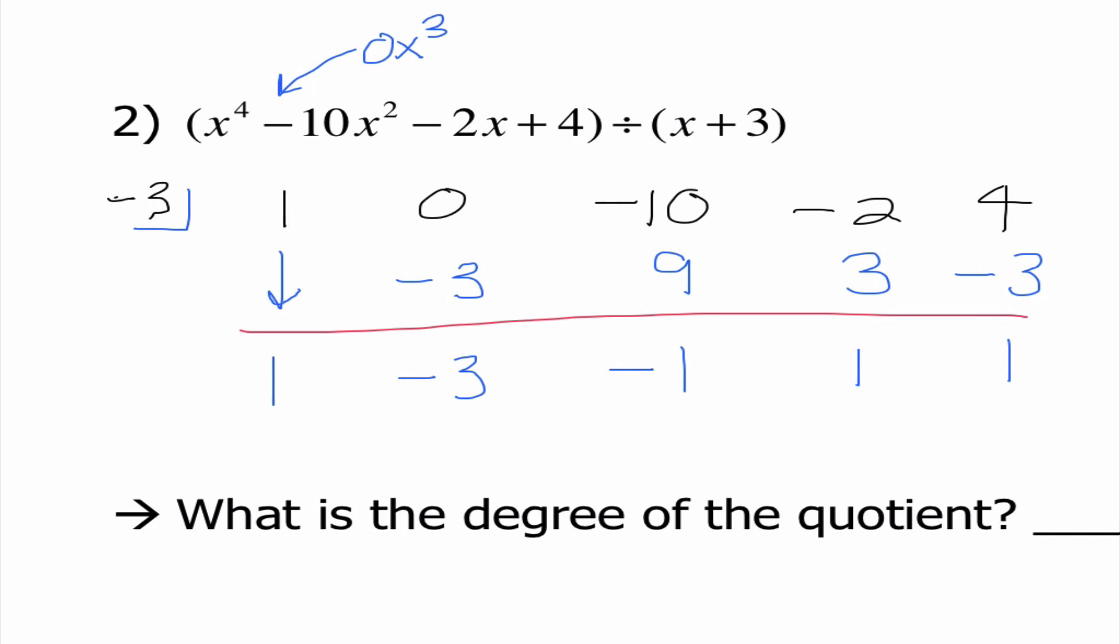So I know I need to rewrite this as an expression. And we always start one degree lower than my original polynomial. So I'm going to go ahead and say this is x cubed minus 3x squared minus x plus 1 remainder of 1. Or I could have said plus 1 over x plus 3.